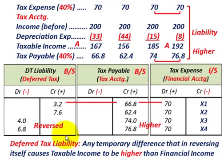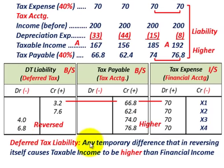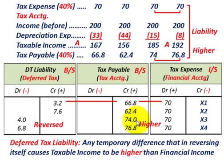Going back to our definition: a deferred tax liability is any temporary difference that, in reversing itself, causes taxable income to be higher than financial or book income. Tax payable for tax accounting became higher than tax expense for book accounting in those later years — that's what we mean by deferred tax liability.